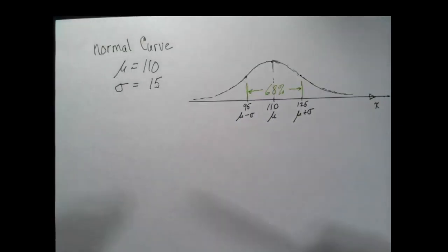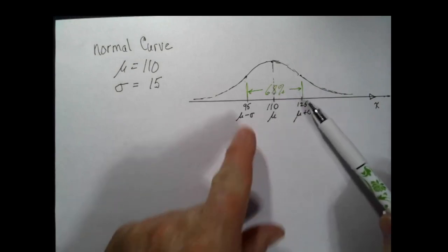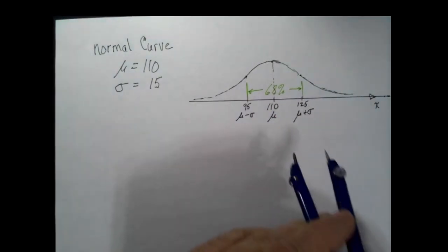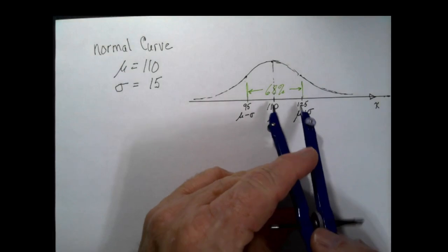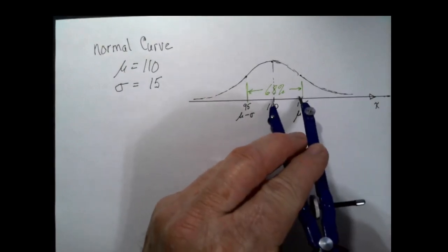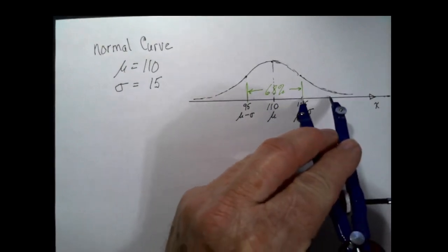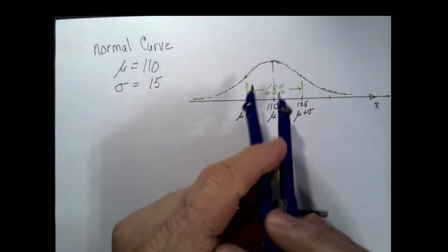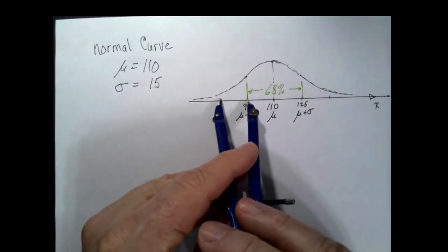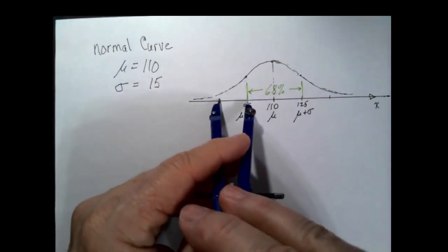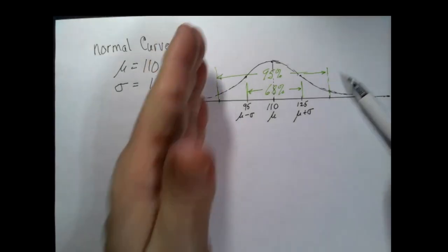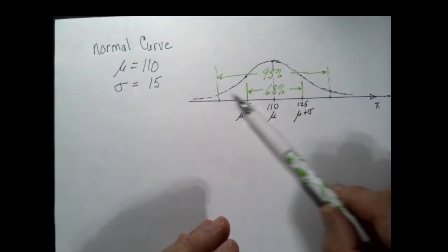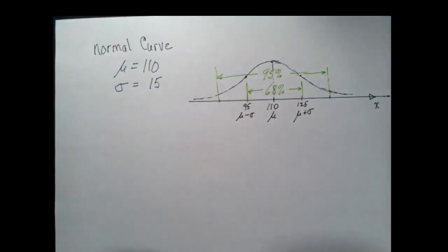Approximately 68% of the population is within one standard deviation of the mean. Within two standard deviations of the mean — one standard deviation, two standard deviations, going in both directions — 95% of the population is within two standard deviations of the mean.